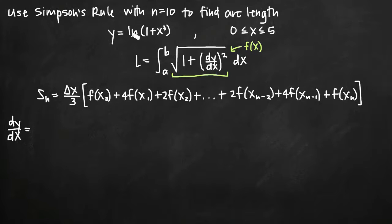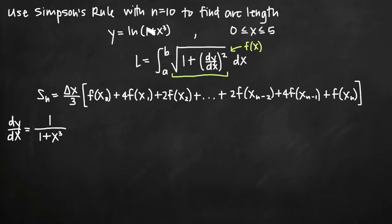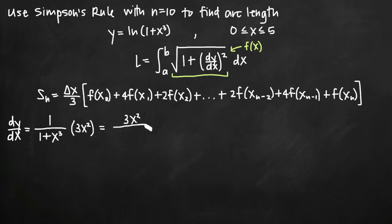Chain rule tells you to take the derivative of the outside function first, leaving the inside function completely alone, and then multiply by the derivative of the inside function. In this case, our outside function is the natural log of the inside function 1 plus x cubed. We take the derivative of the natural log, ignoring the inside — just pretend it's ln of x, whose derivative is 1 over x. So we get 1 over 1 plus x cubed. Then we multiply by the derivative of the inside function: the derivative of 1 plus x cubed is 0 plus 3x squared, which is just 3x squared. So dy over dx simplifies to 3x squared over 1 plus x cubed.